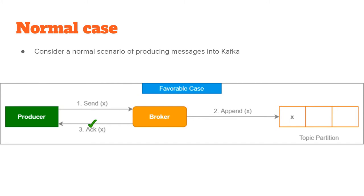Consider a normal scenario of producing messages into Apache Kafka. The producer will send the write request — in this case it wants to write X into a Kafka topic. The broker will append X into that Kafka topic and then it will acknowledge the producer.